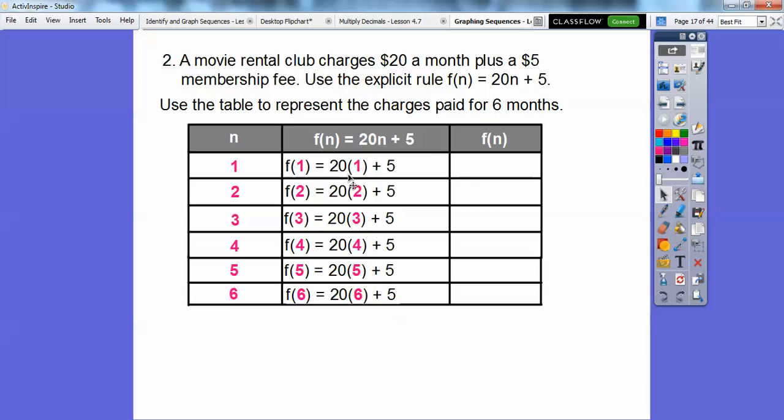And then so 20 times 1 is 20 plus 5 is 25. And then 20 times 2 is 40. 40 plus 5 is 45. 20 times 3 is 60. 60 plus 5 is 65. Can you see a pattern? They're just going up plus 20, plus 20. It's this $20 a month, so I'm just going to keep adding 20 for the rest of the 3. So if I add 20, 85, 105, 125.